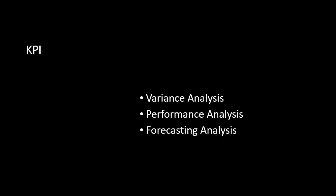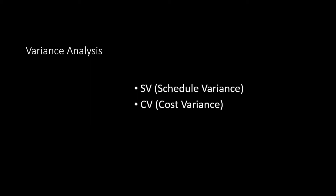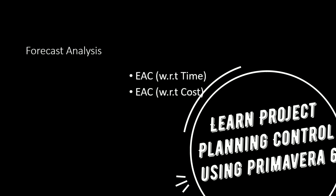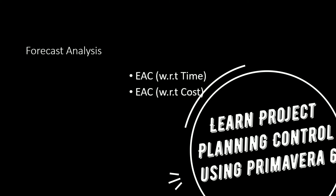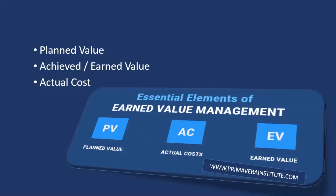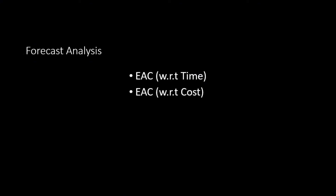In KPI, you have three kinds of analysis: variance analysis, performance analysis, and forecasting analysis. Variance analysis shows deviations from the planning phase to the execution phase. Performance analysis shows the performance status. Forecasting predicts what you have and what you need to complete the project on target. In variance analysis we cover schedule variance and cost variance; in performance analysis, schedule performance index and cost performance index; and in forecasting, estimate at completion for time and cost.